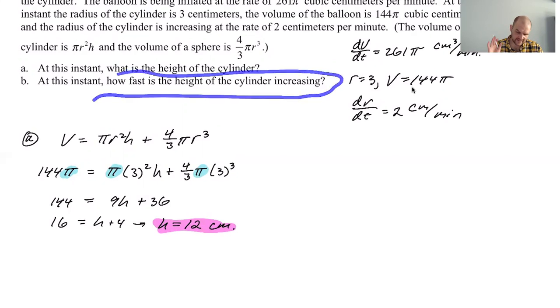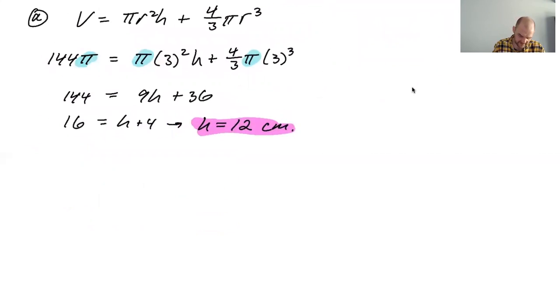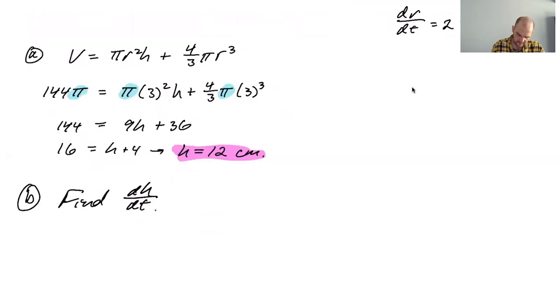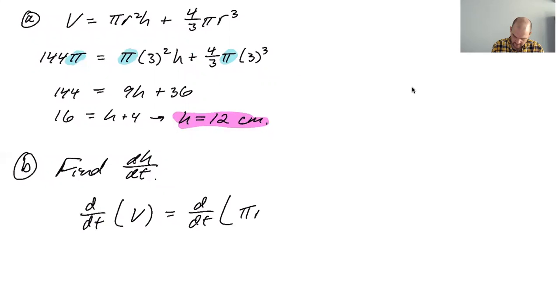At this instant, how fast is the height? So we're finding DH DT. I think we have to use this. So part B is essentially saying find DH DT. The volume, and do DDT of volume equals DDT of, I mean, I should probably factor this a little bit or something, but notice me not doing that.